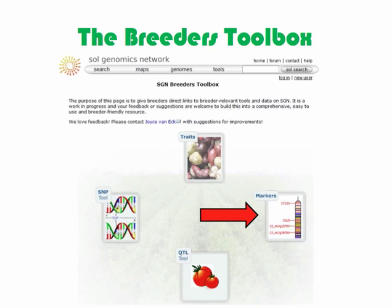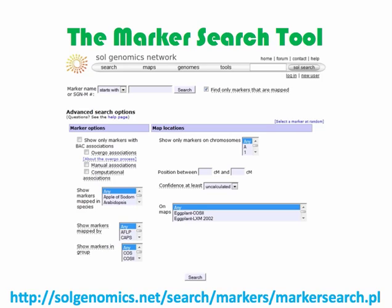Note that you cannot currently use this tool to identify markers associated with a trait. The search tool is loaded after clicking on the Markers button in the Breeders Toolbox. Alternatively, you can get to the Markers search tool directly by copying and pasting the link provided at the bottom of the screen. The remainder of the tutorial will consist of examples of searches you may want to conduct using the SGN Marker Search Tool.